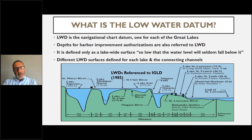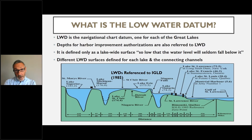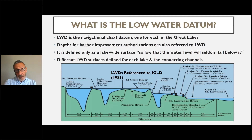Low water datum is the zero level used for the navigational charts of each lake. When real-time water levels are referenced to this datum, the value observed is the amount added or subtracted from the depths shown on the chart. Authorization depths for harbor improvements are also referenced to the low water datum and for the deepening and maintenance dredging of shipping channels. It should be a lake-wide surface so low that the water level will seldom fall below it. One datum is defined for each lake and is interpolated within the interconnecting waterways.